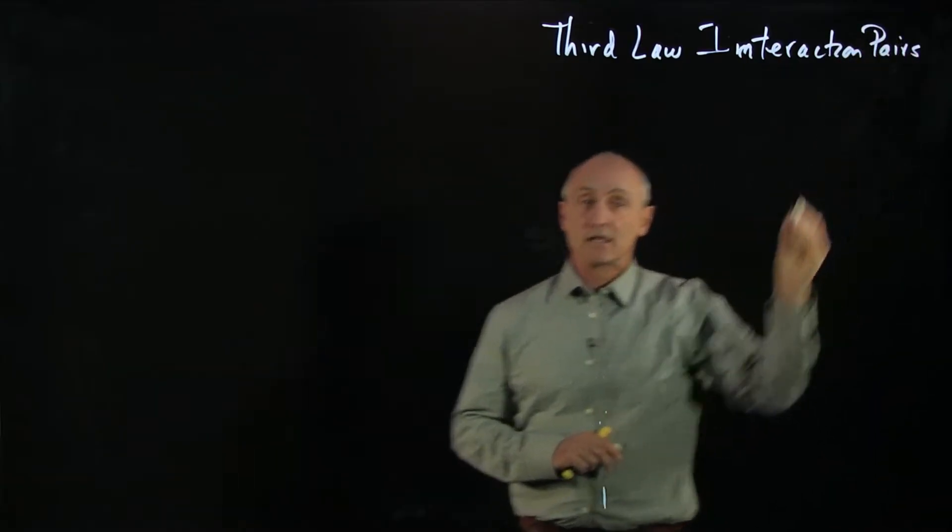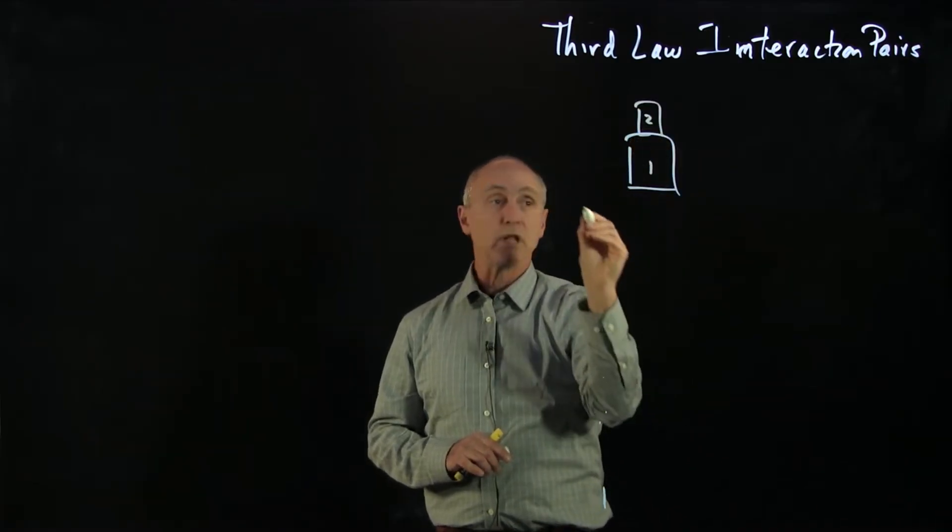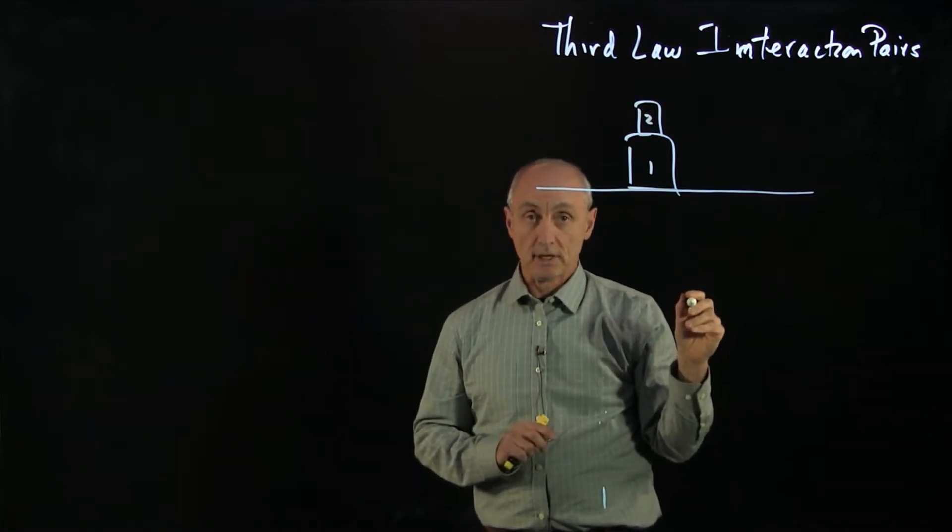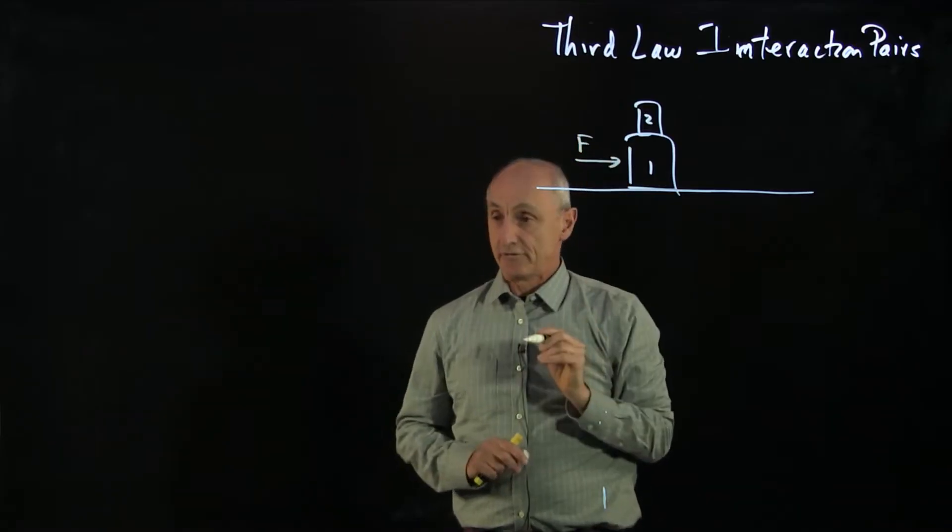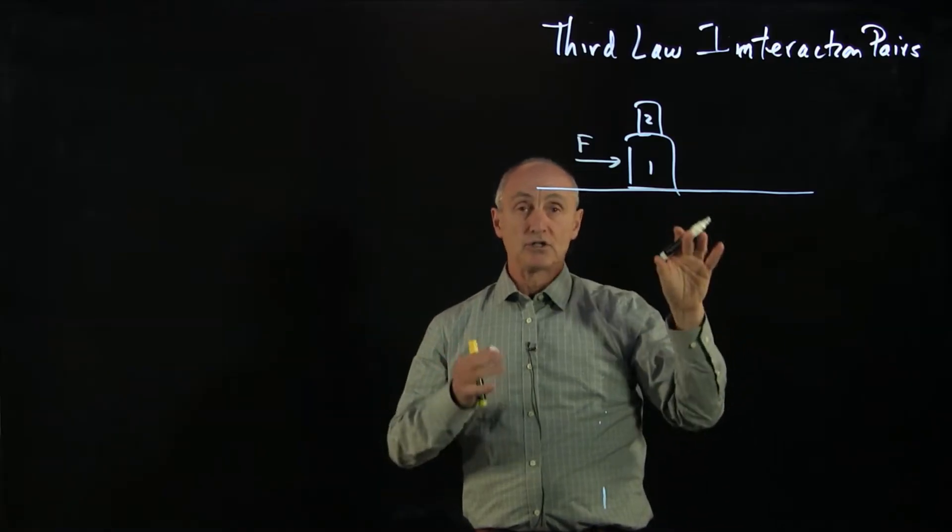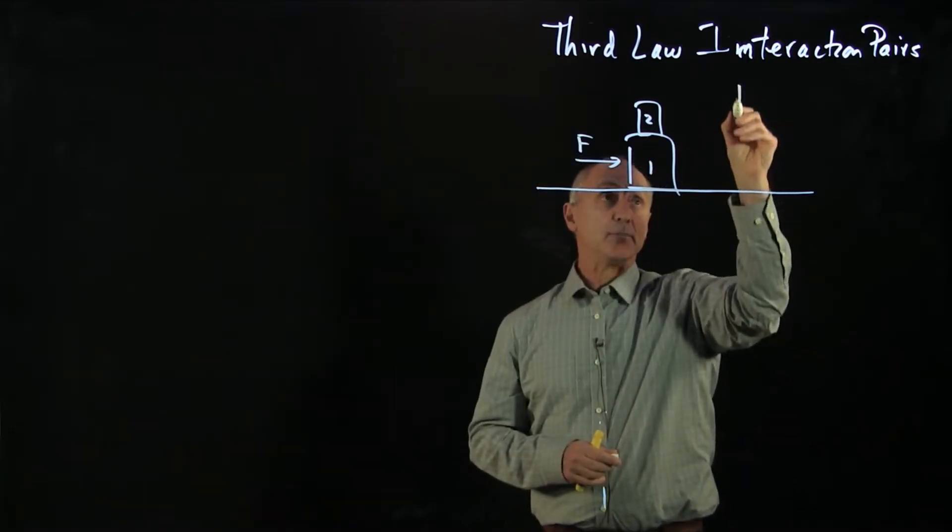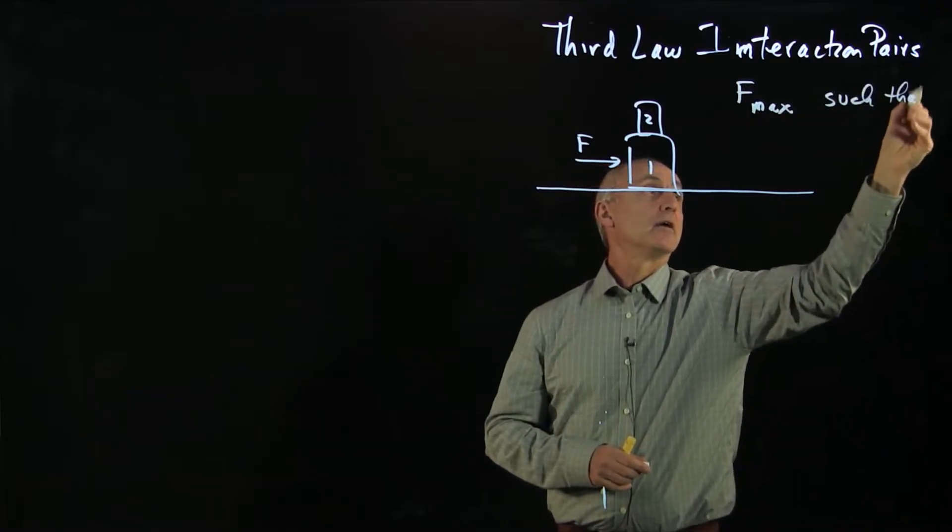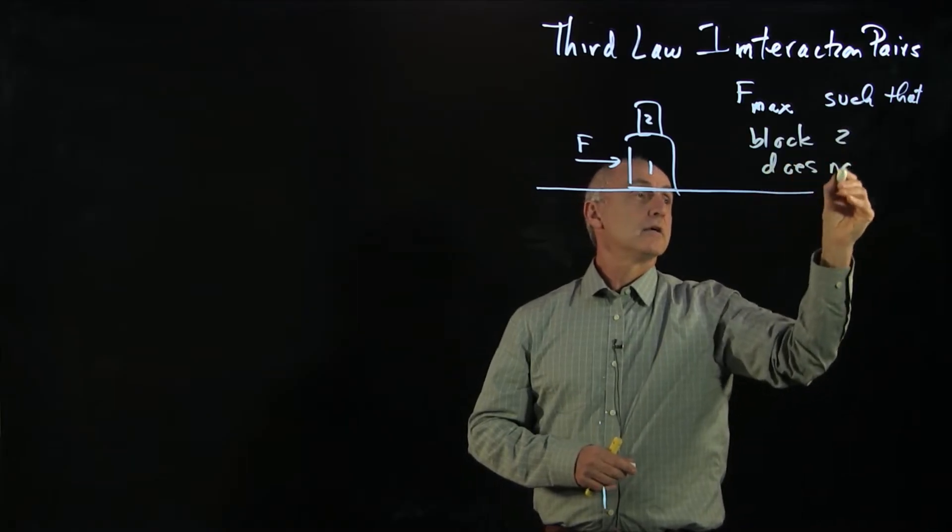Now the problem I'd like to consider is the following. Suppose we have block one and another block two sitting on block one on a surface, and our surface has friction. I'd like to push block one with a force F. And now I'd like to use Newton's second law to determine what is the maximum force I can push that block two will not slip. So I'm trying to find F max such that block two does not slip.